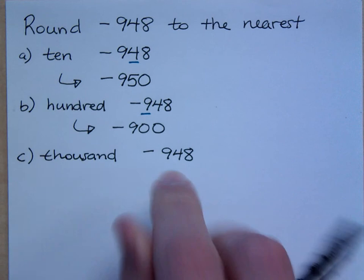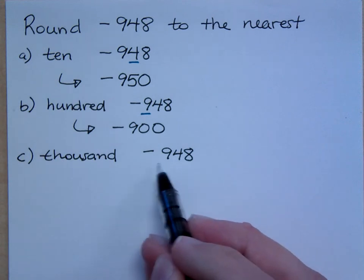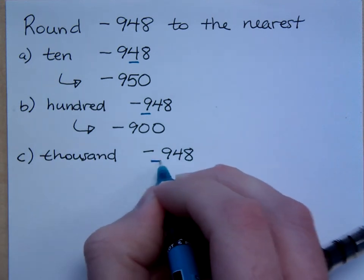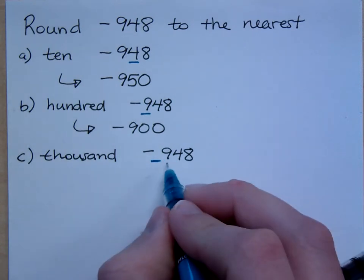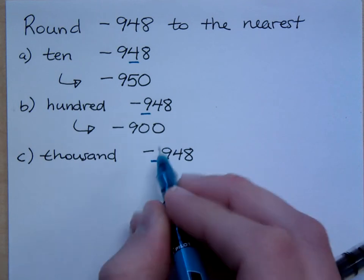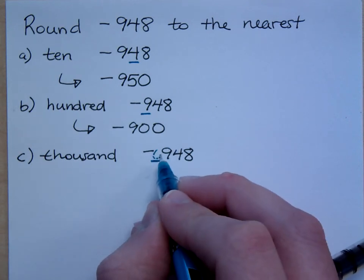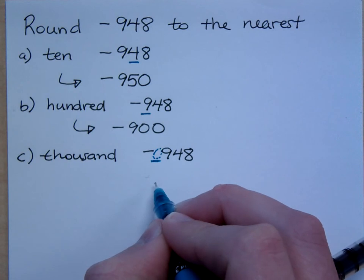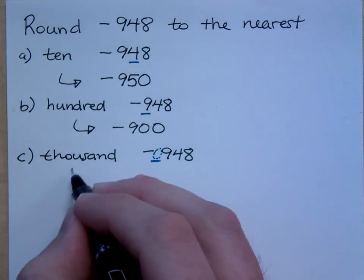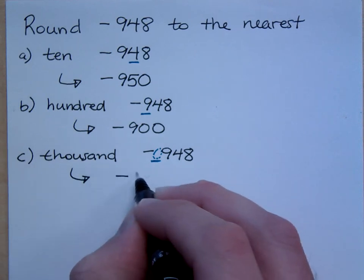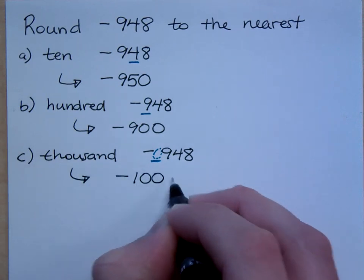Right, because this is 1s, 10s, 100s, so 1,000s would be right here, but I don't see anything. So I look at the 9, is that going to make me round up or down? So since this is, you can imagine that there's a 0 right here. I'm going to have to round this 0 up, so I round to the nearest 1,000, and I have what? Negative 1,000.